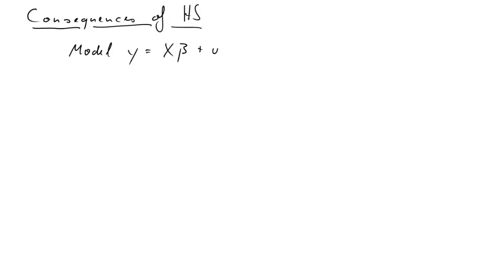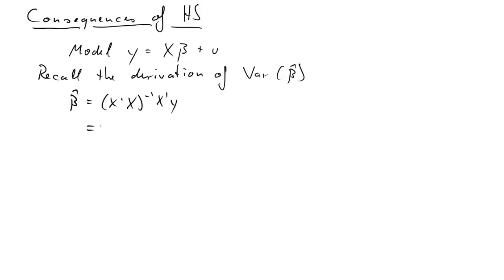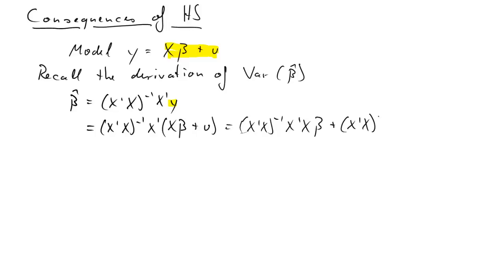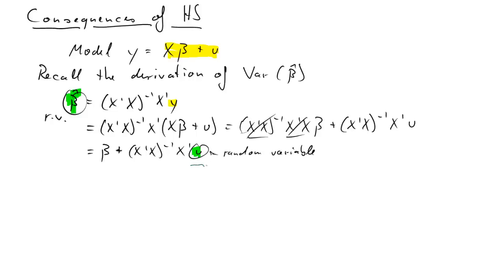The first thing we'll look at is the consequences of heteroscedasticity. Here's our model: y = X*beta + u. Let's recall the derivation of the variance of beta hat. Here's our OLS estimator beta hat. If we replace y with the model and substitute the model equation in, after some algebra those terms cancel out and we get beta hat = beta + (X'X)^{-1}X'u. Since u is a random variable, beta hat is also a random variable.